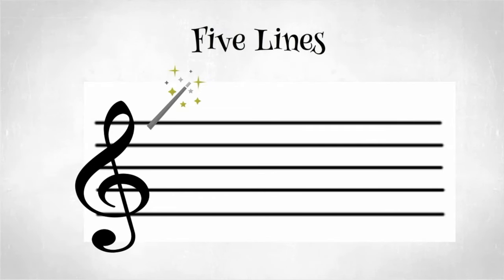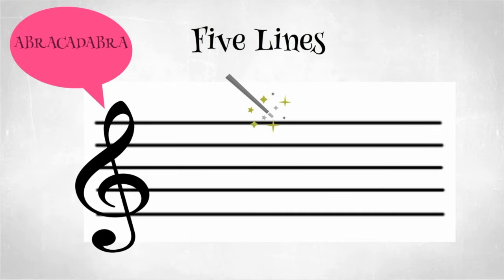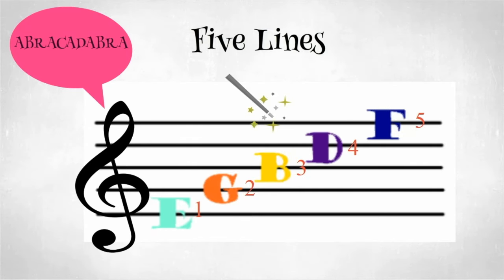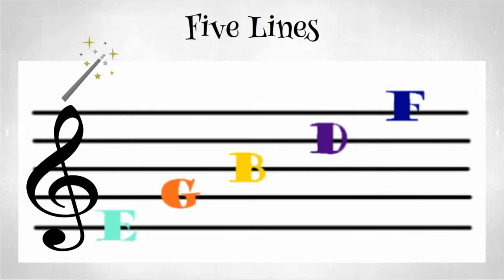Remember when we said the treble clef had magic powers and can tell us which hand to perform? Well, the treble clef is added again and using its magic powers to assign a different letter from our music alphabet to each line. The line letters are E, G, B, D, and F. So every time you see the treble clef on the staff, the lines will be E, G, B, D, and F.